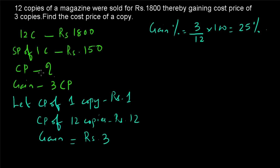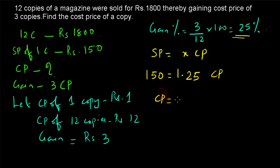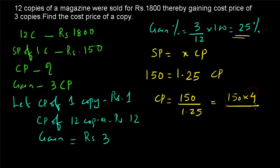We have the selling price and the gain percentage, so we can find the cost price. The formula is: SP equals x into CP, where x equals 1.25 since the gain is 25%. So 150 equals 1.25 into cost price. Cost price equals 150 divided by 1.25, which is 150 divided by 5/4, giving us 150 into 4/5, which equals ₹120.